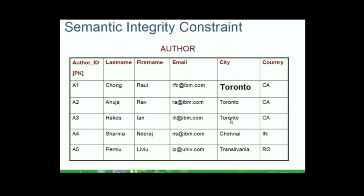Semantic integrity constraint — for this, let us see another example in the author relation. If the column city contains some junk value instead of a proper city name like Toronto, does it give any meaning to the column name city? A semantic integrity constraint refers to the correctness of the meaning of the data.